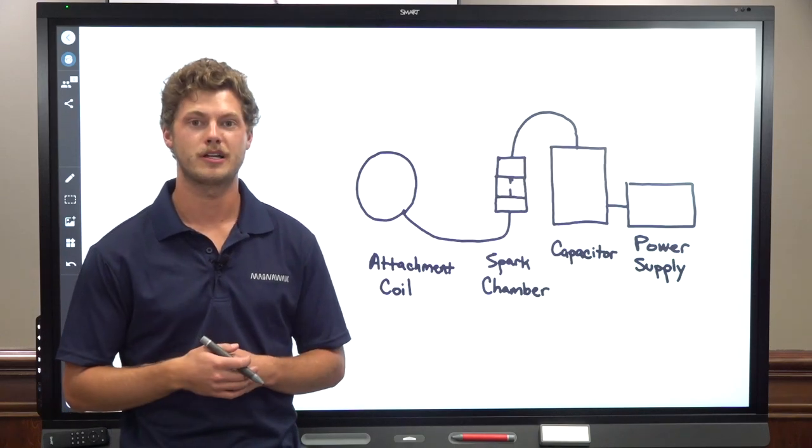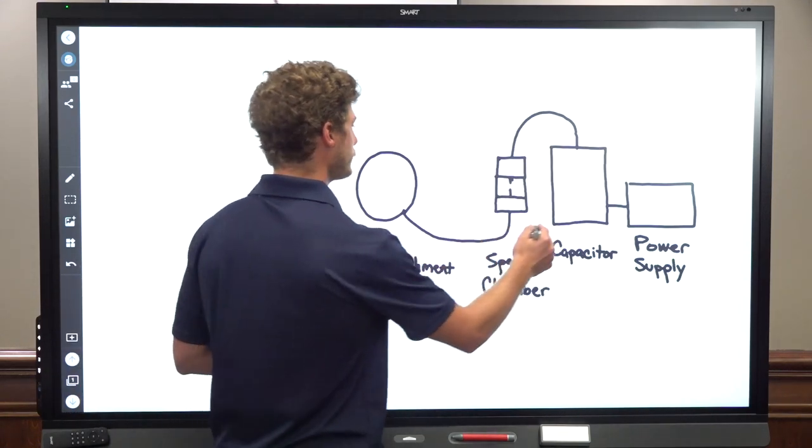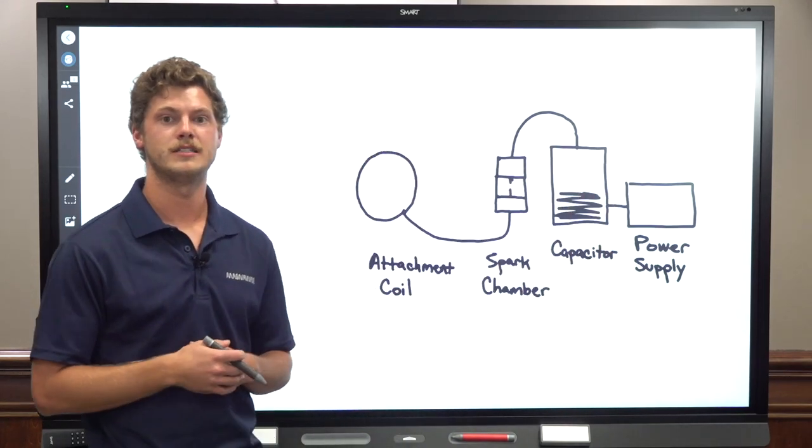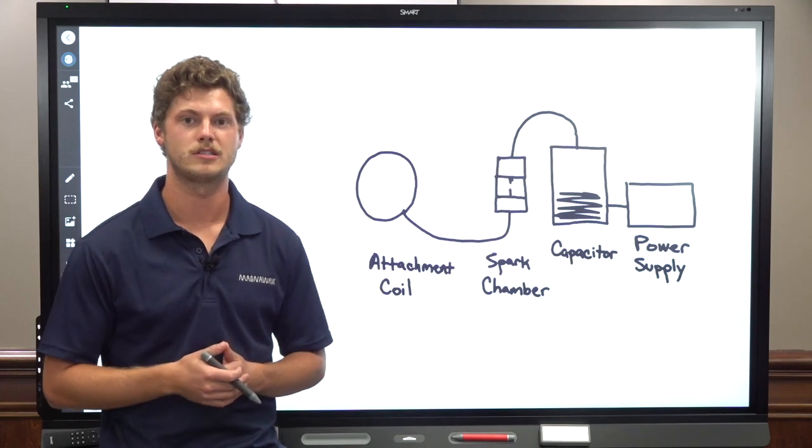We begin with the power supply charging up the capacitor. A capacitor is an energy storage device that holds the energy from the power supply until it's ready to dump all of that out at once to the attachment.